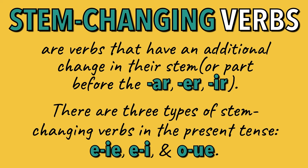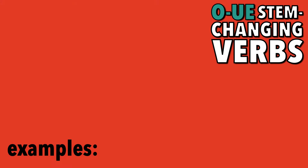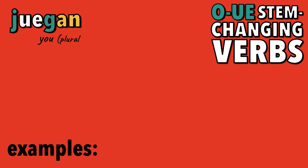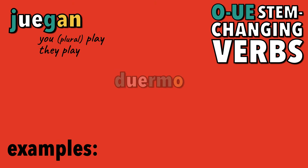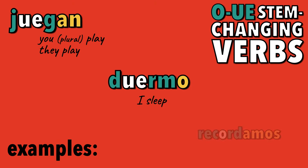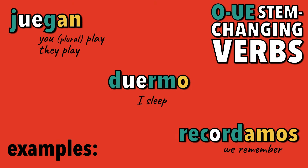In this video, we'll talk about verbs that change from O to UE. Some examples are juegan, duermo, and recordamos.